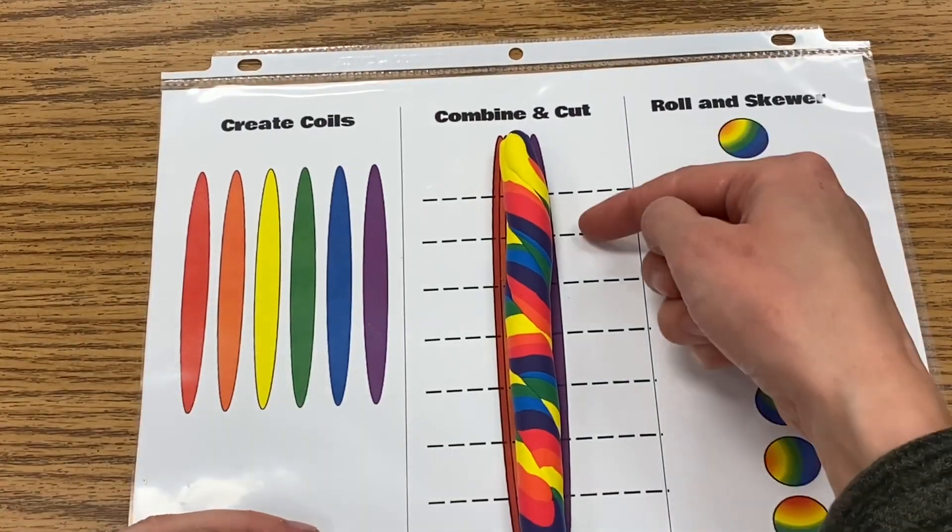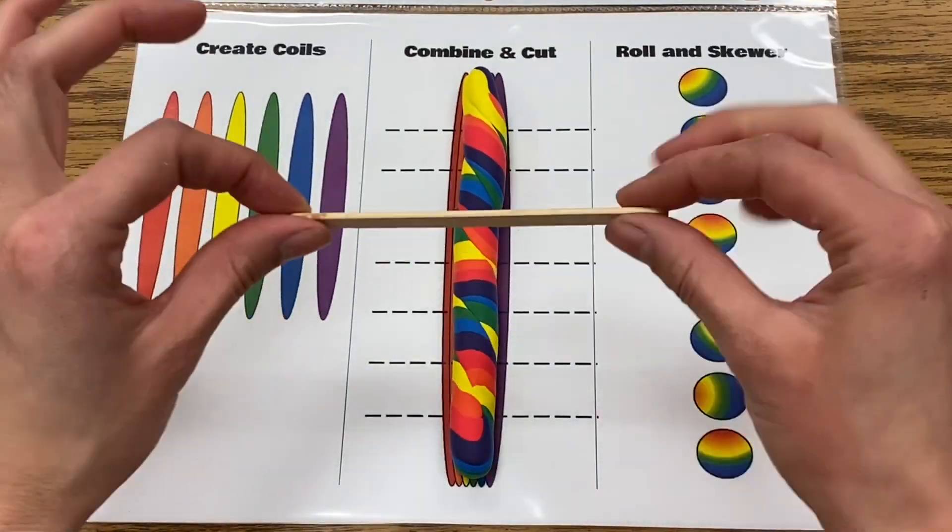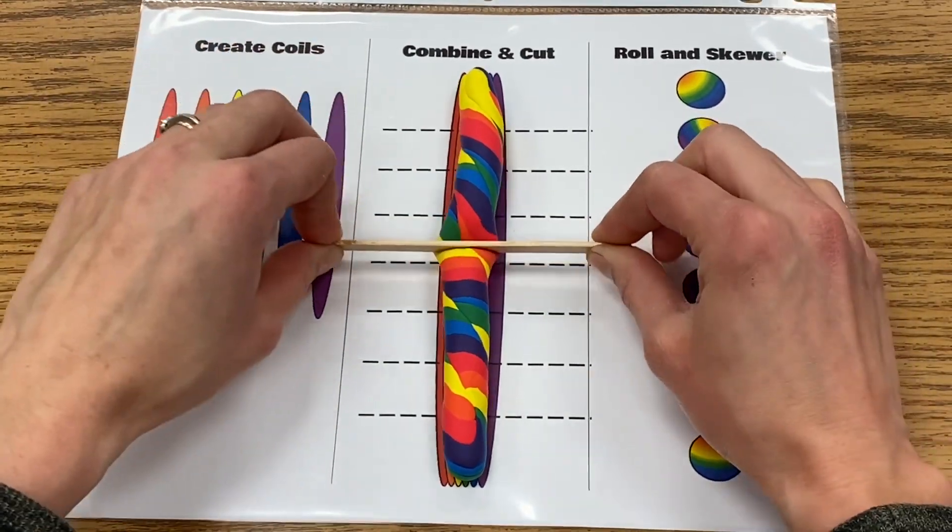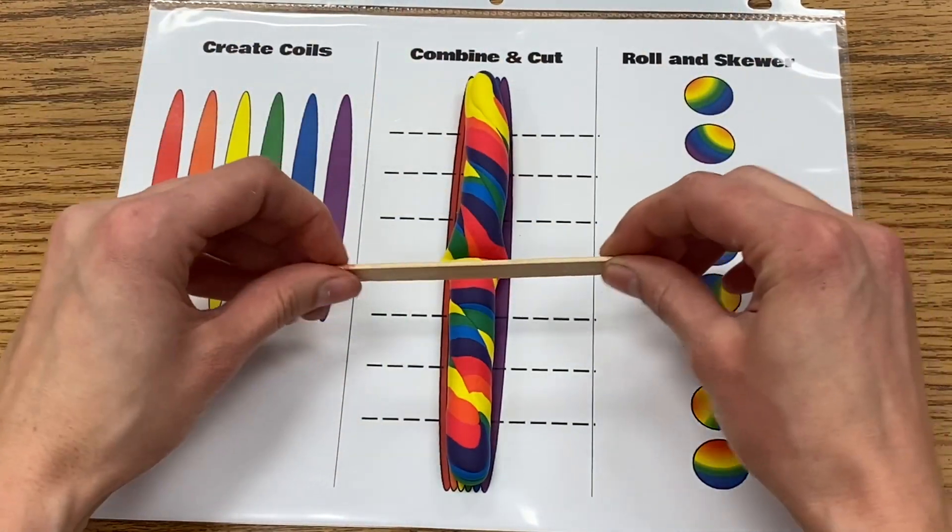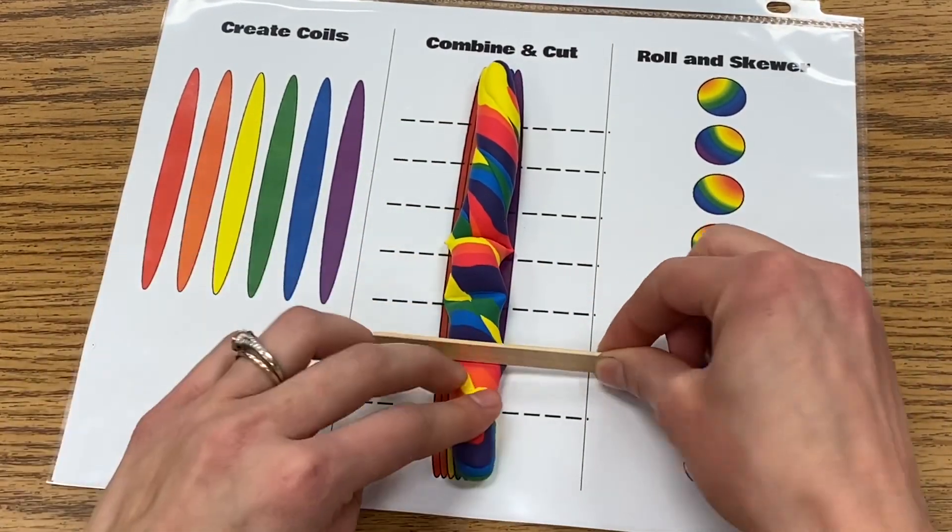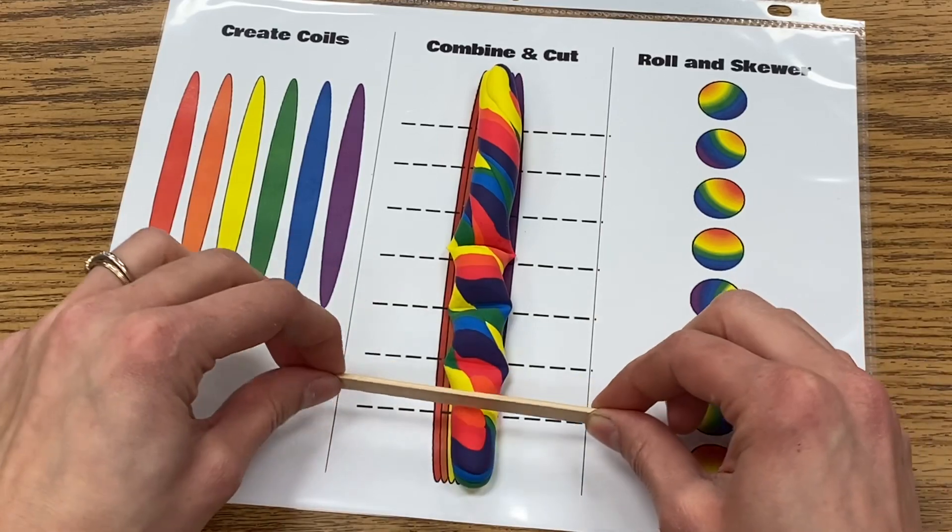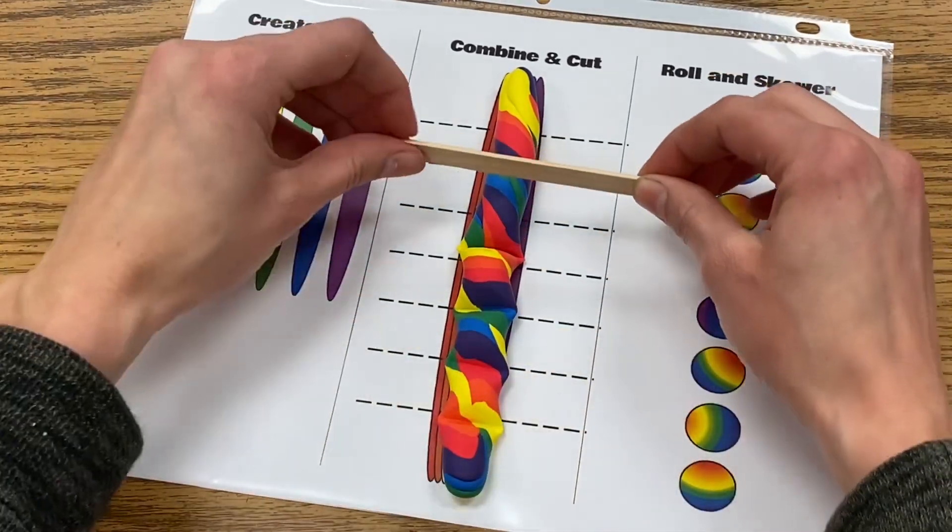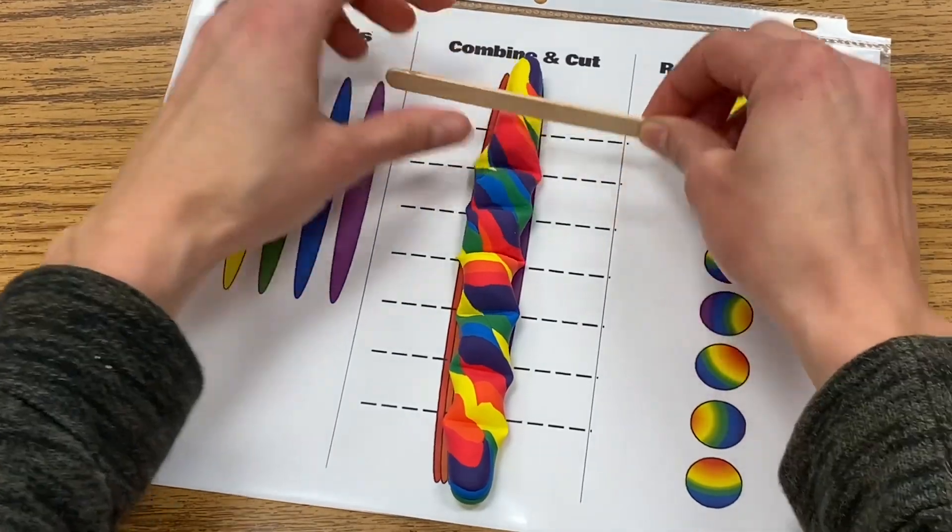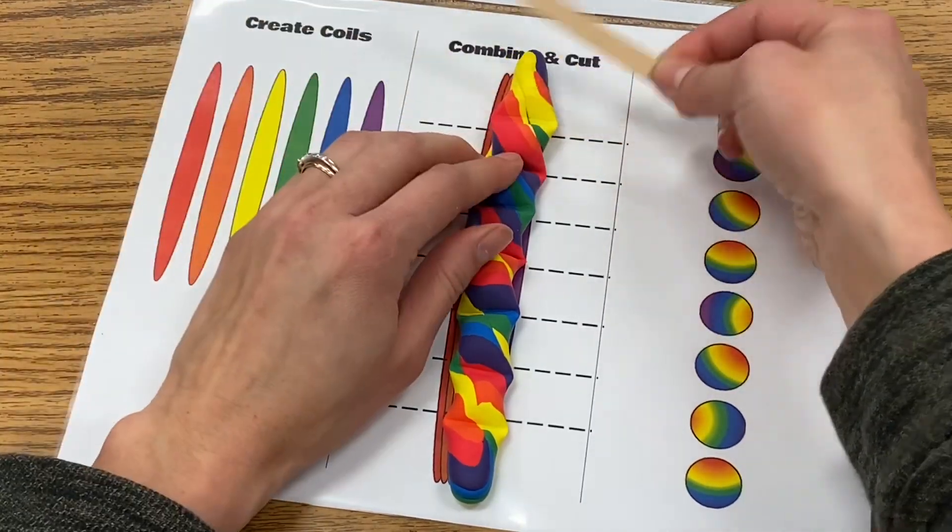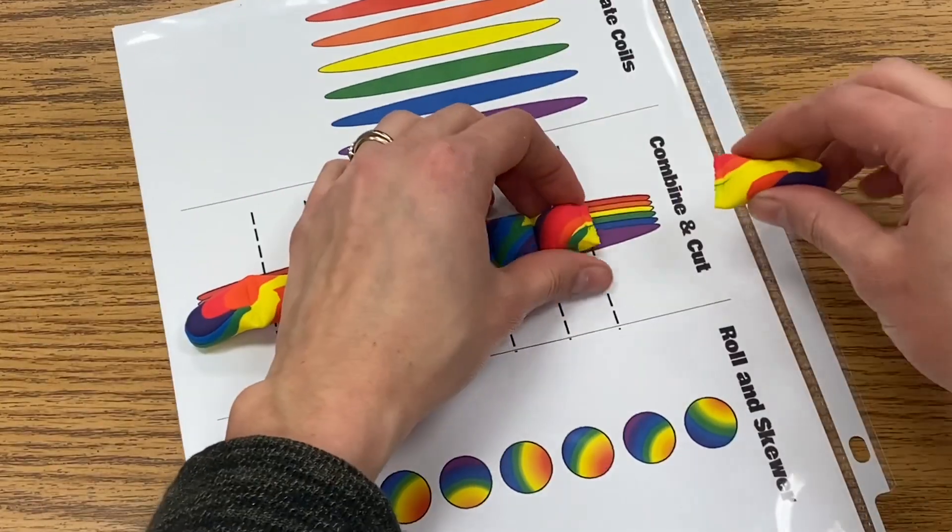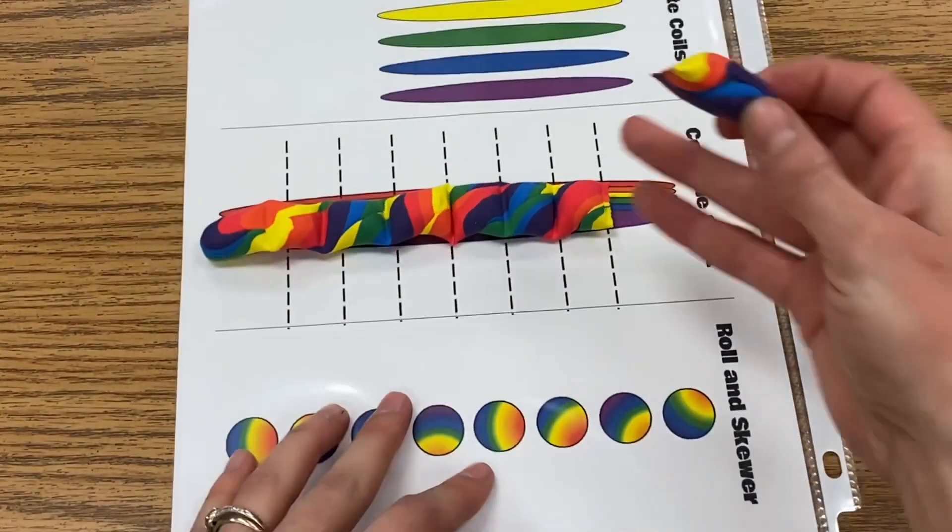Now it is time to cut. So using a popsicle stick, you're going to use these lines as your guide, and you're going to hold it and put it over a line. You're just going to press down pretty hard—it might not cut all the way through and that's okay. I'm just going to press on all of my lines, and if I do that I should get eight pieces.